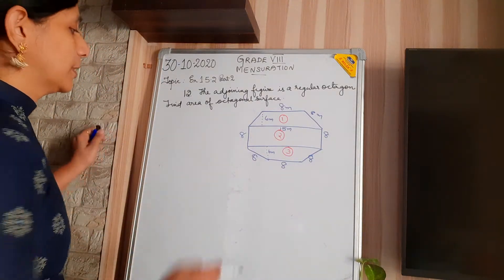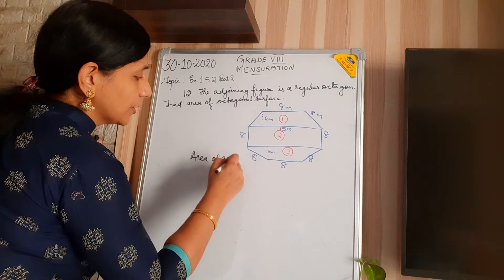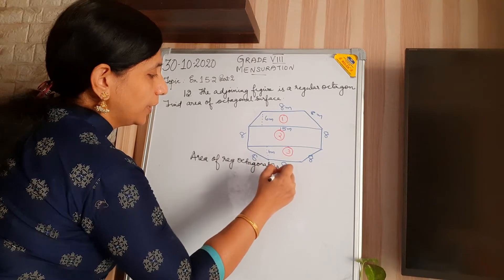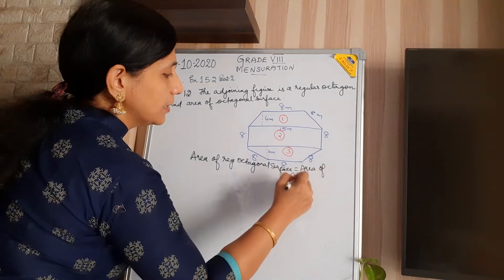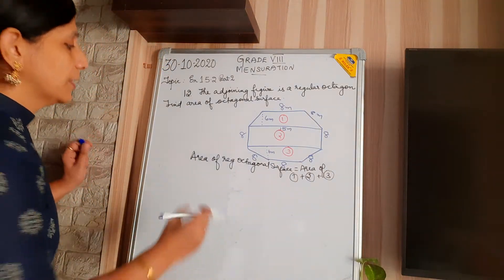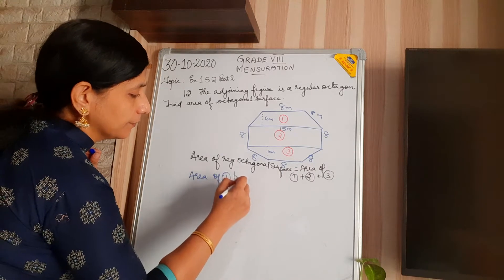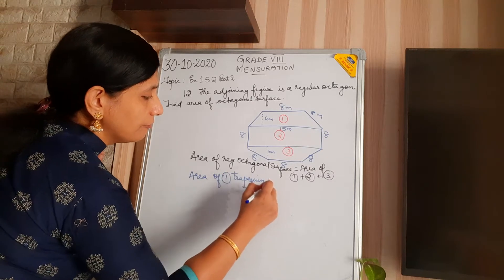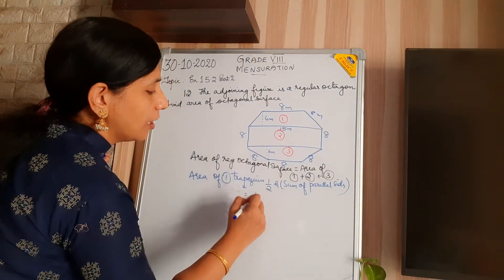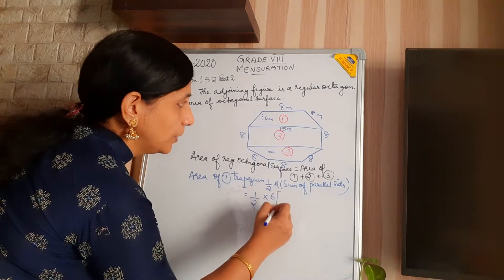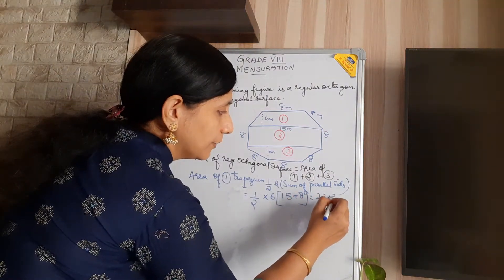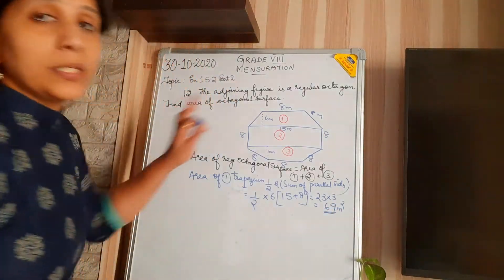Area of the regular octagonal surface equals area of part 1 plus area of part 2 plus area of part 3. Area of part 1, which is a trapezium, equals half × h × sum of parallel sides. H is given as 6 metres. The parallel sides are 15 and 8, so 15 + 8 = 23. Then 23 × 6 ÷ 2 = 69 metres square.